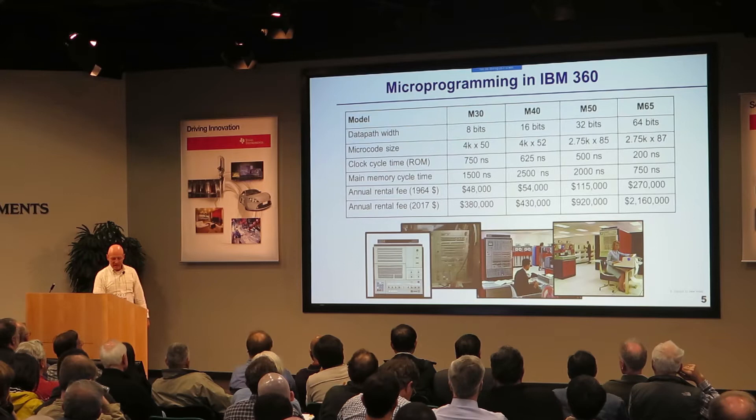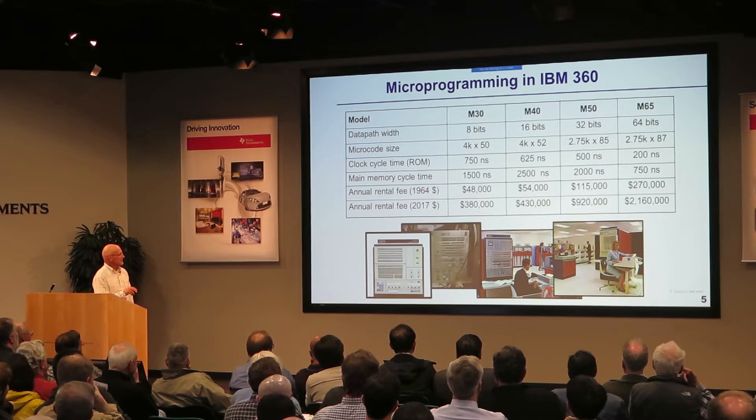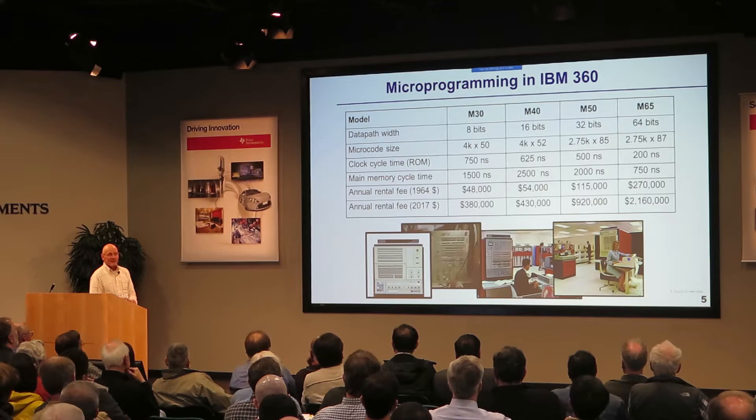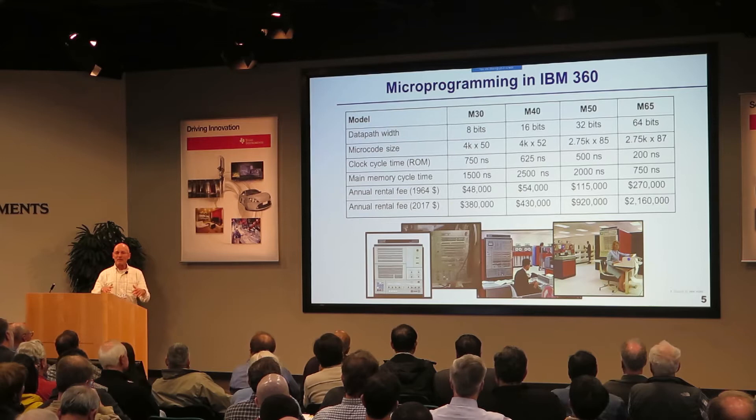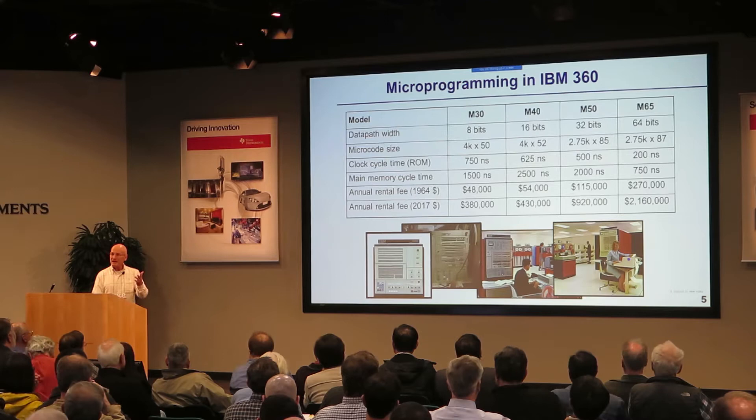They had different speeds of memory and different clock rates. In today's dollars they would rent them to you for anywhere between a half million and two million dollars. IBM bet the company on binary compatibility and they won that bet. It came out in 1964 and dominated mainframe computers, and there's a descendant of that still running today.